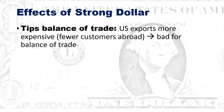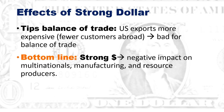A strong dollar can tip the balance of trade because US exports become more expensive for people outside the US to buy — bad for our balance of trade. The bottom line is a strong dollar has a negative impact on multinationals, because they're crossing borders looking for markets, and if the dollar is really strong they'll get fewer customers in the open market. It's therefore bad for manufacturing and for those who produce resources.